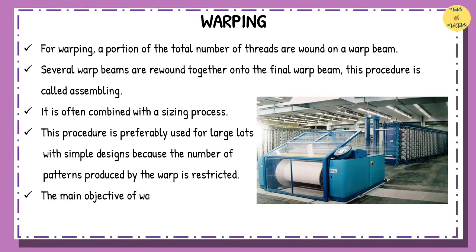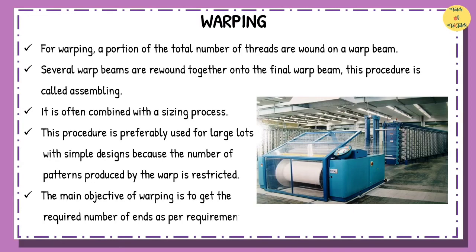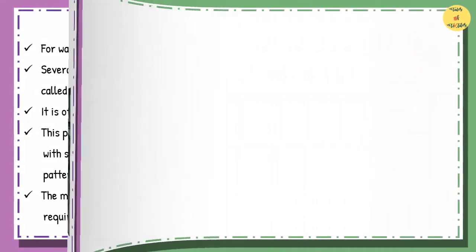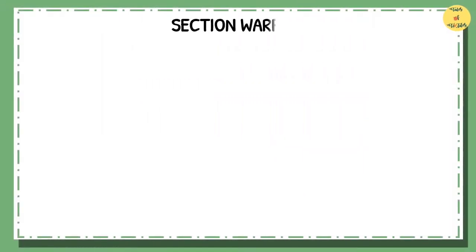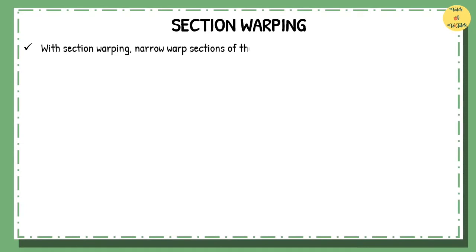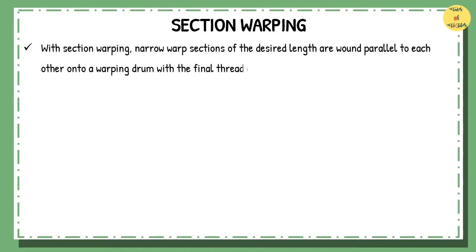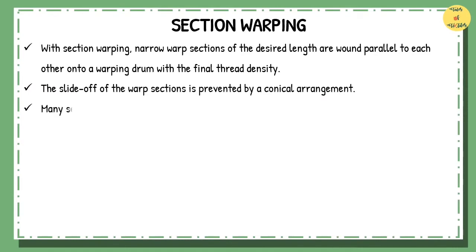The main objective of warping is to get the required number of ends as per requirement. With section warping, narrow warp sections of the desired length are wound parallel to each other onto a warping drum with the final thread density. The slide-off of the warp sections is prevented by a conical arrangement. Many sections are deposited next to each other until the whole width of the warping drum is filled.